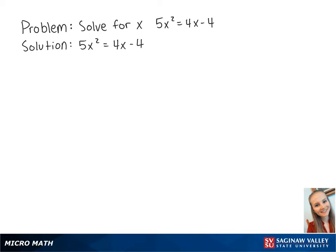For this problem, we want to solve for x in the equation 5x squared equals 4x minus 4. First, we want the right side of the equation to be equal to 0. So we're going to subtract 4x minus 4 from both sides to get 5x squared minus 4x plus 4 equals 0.